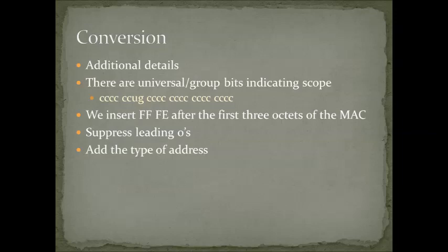Let's do a conversion. Before we do, there are a couple of things to remember. One is that in the first couple of bits of this conversion, there's something called the universal or group bit, which gives us our idea of scope — how far this address can reach or how far someone can communicate using this address. Another detail: we're going to take those FFFE hex characters and insert them after the first three octets of the MAC address. This will be the basis for our IP Version 6 address.